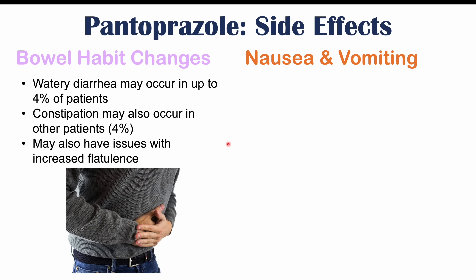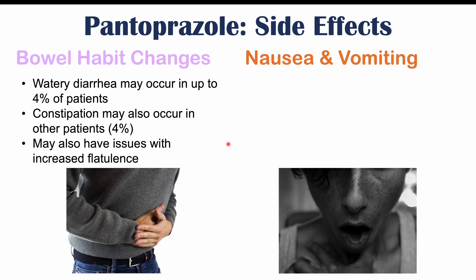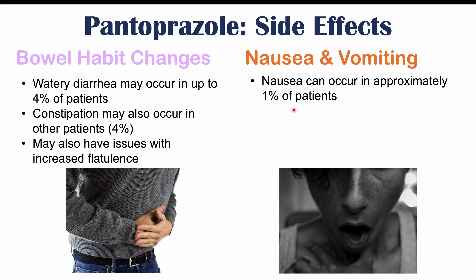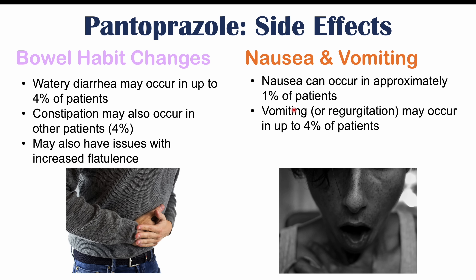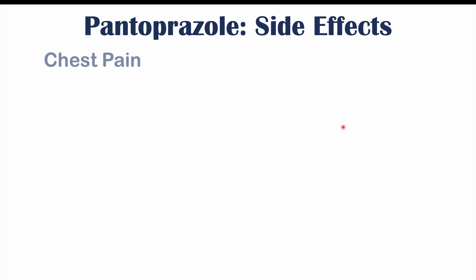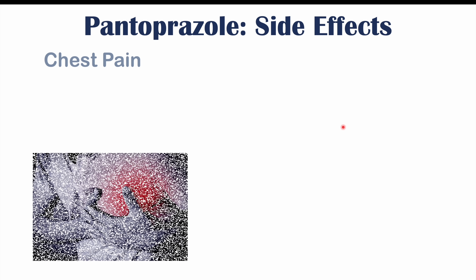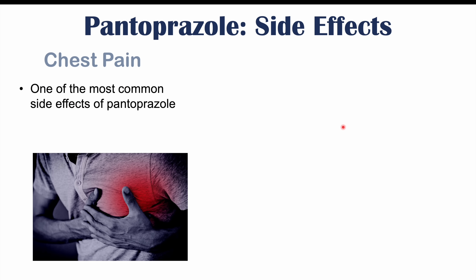Nausea and vomiting can also occur with proton pump inhibitor use. Nausea can occur in approximately one percent of patients, while vomiting or regurgitation is more likely to occur and can affect up to four percent of patients. Chest pain can also be one of the more common side effects of pantoprazole use, with roughly four percent of patients affected.